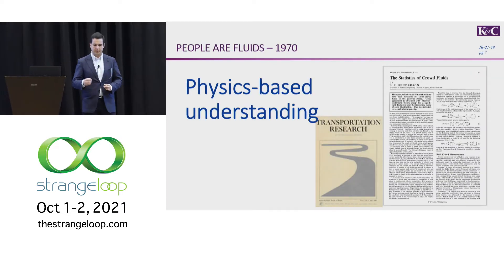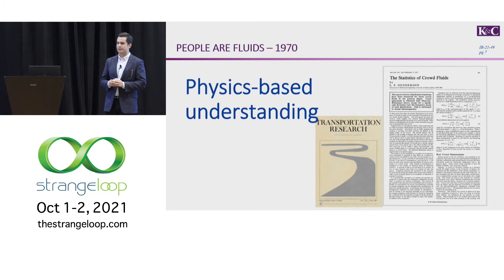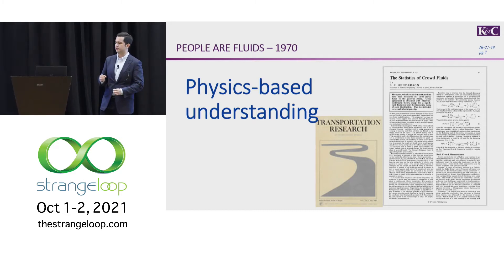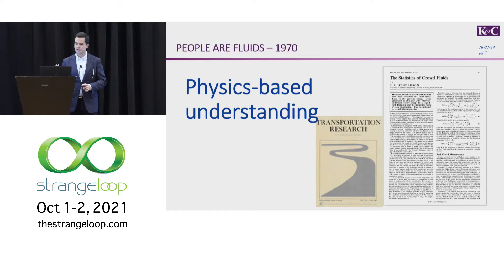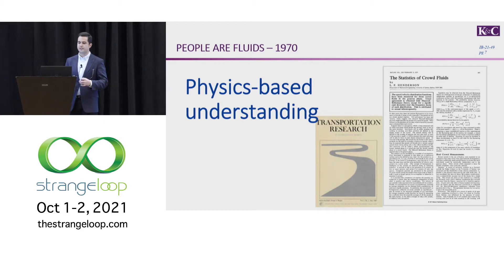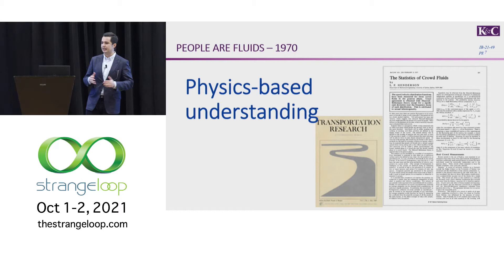In the 1970s, people started looking at crowd dynamics more closely, and they started to see resemblances of particles in space. This paper by Henderson was able to show that we can apply Maxwell-Boltzmann's mechanics and states of gaseous particles. What if we make those same assumptions about people, and how well does that correlate with data that we have? That's leading to more of a physical-based understanding of movement.